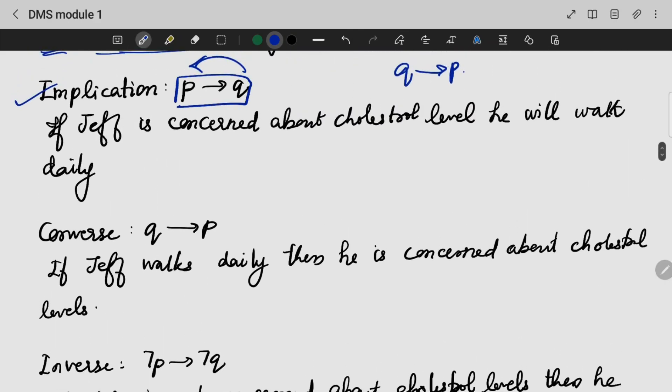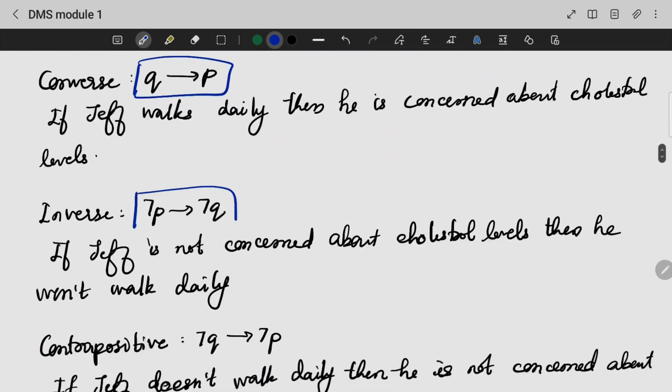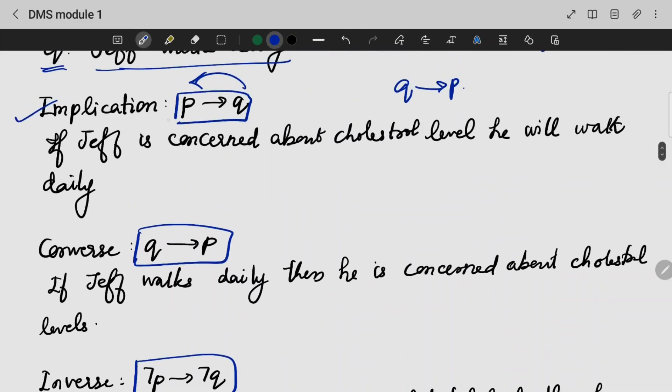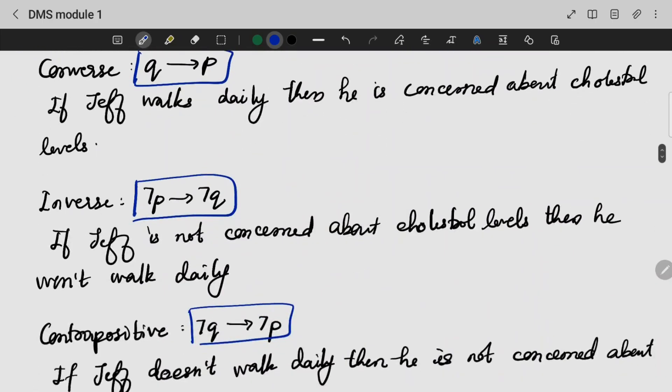Converse: P gives Q becomes Q gives P. That is, if Jeff walks daily, then he is concerned about the cholesterol level.